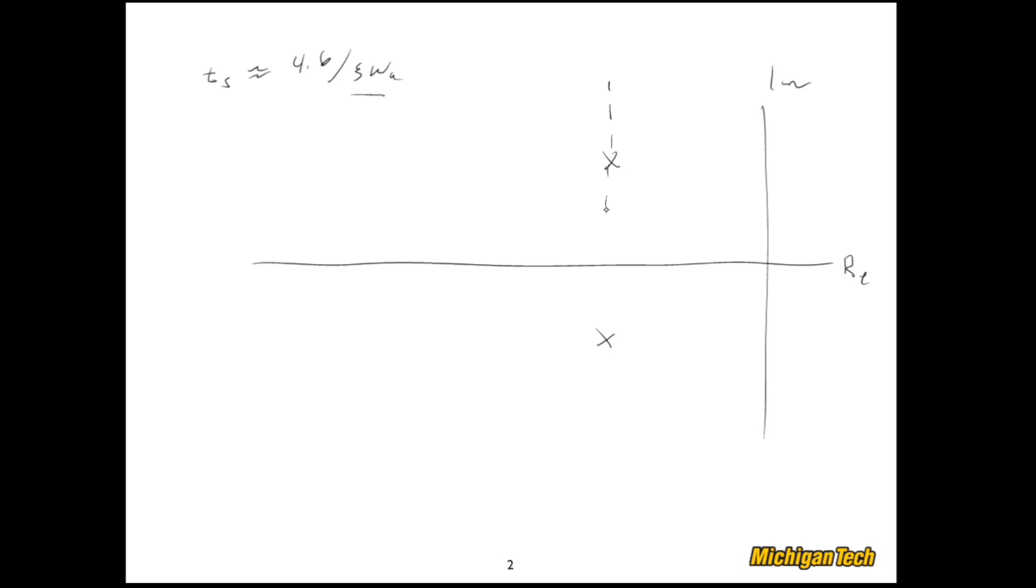So what that means is that this dashed line is actually a dashed line of constant settling time. So if I were to somehow move those poles up and down that dashed line, my step response settling time would stay approximately the same.